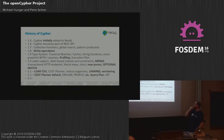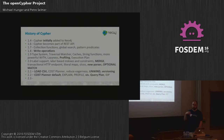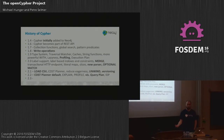In 1.9 we added profiling, execution plan visualizations, and made sure Cypher is always as lazy as possible. Cypher only pulls data from the graph while returning results. The only things that cause it to be non-lazy are ordering and aggregation.